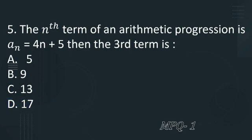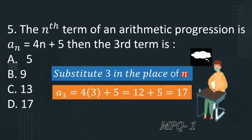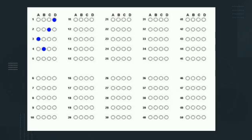The question is taken from model question paper. Substitute 3 in the place of n because we need to find third term, so a_3 is equal to 4 into 3 plus 5, 12 plus 5, that is 17. So the correct option is D here.